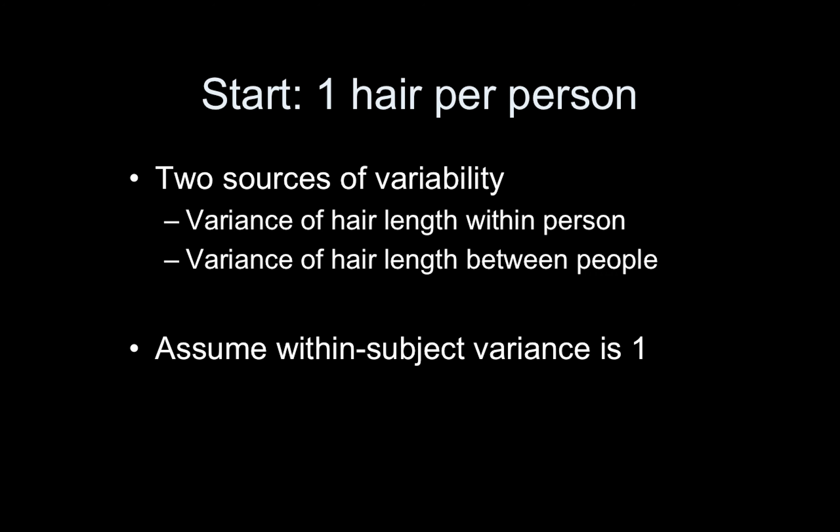So you have within-person variability in hair length, and then between-subject variability because we all have different haircuts. As I said, an oracle has come down and told me the within-subject variance is one inch, or one whatever. Let's do one centimeter.